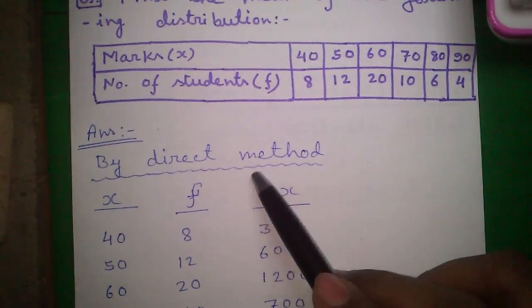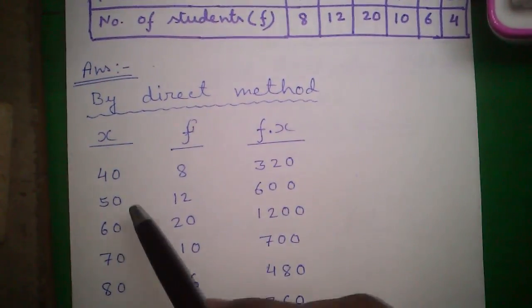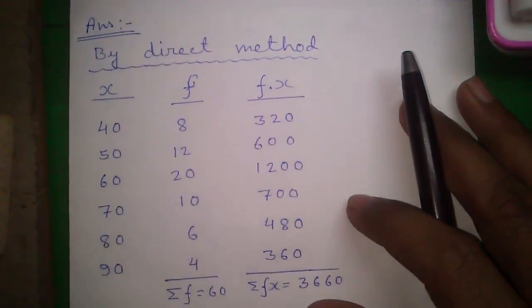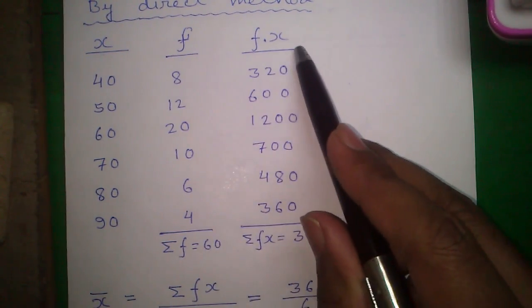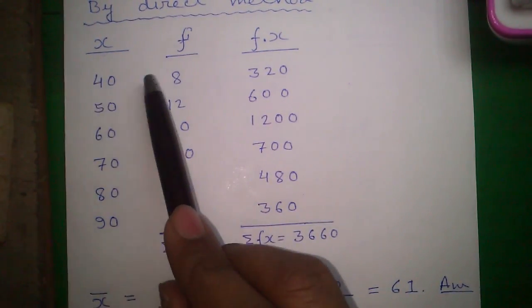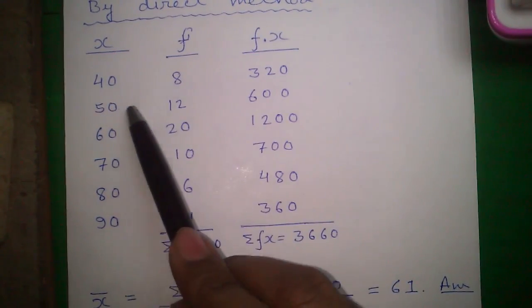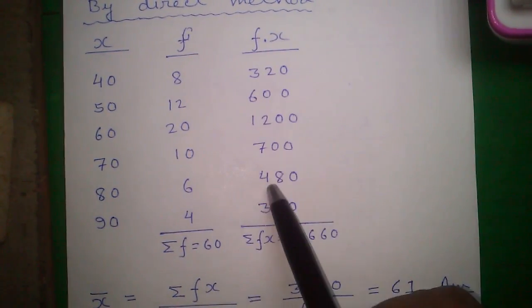So answer by direct method. First write all X values column wise and all F values column wise. Next find out F dot X or F into X. Just multiply 40 into 8, which is 320. 50 into 12 is 600, and write.